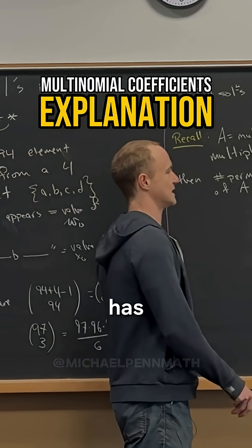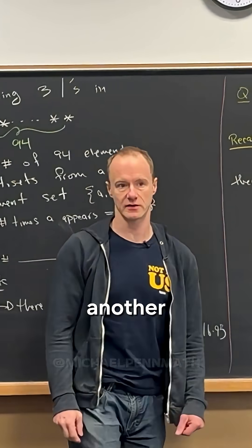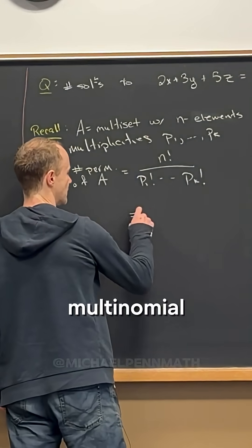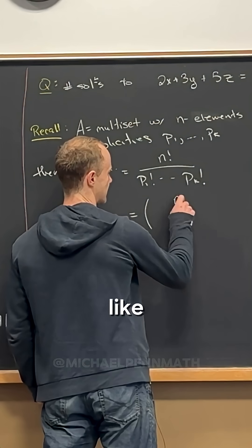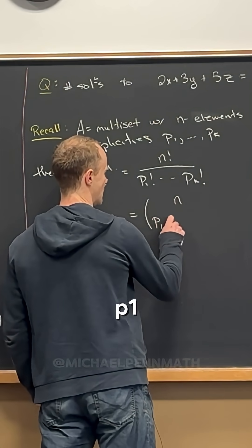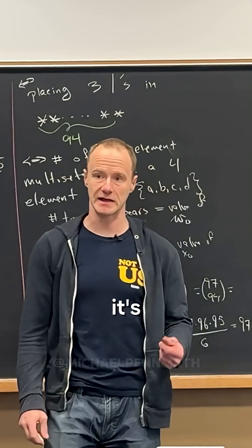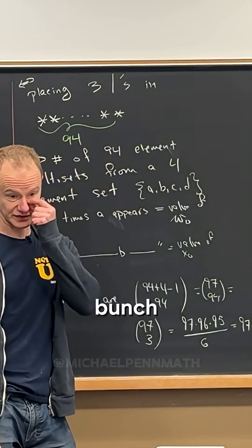So this actually has another name and another life if you will. This is a so-called multinomial coefficient. You would write it like this: n choose p1, p2, up to pk. So instead of just n choose k, it's n choose—you're choosing like a bunch of things.